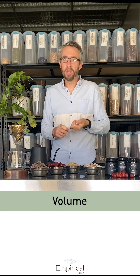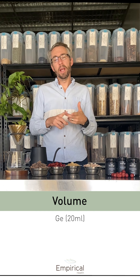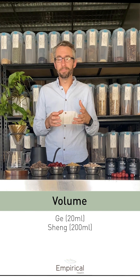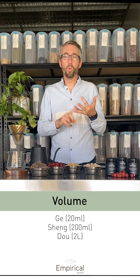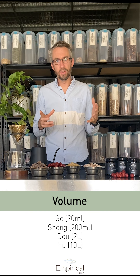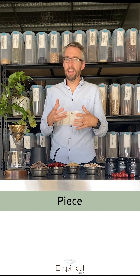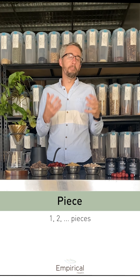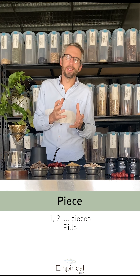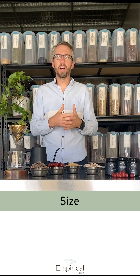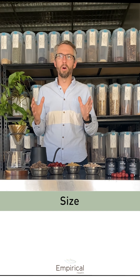For volume measurement, a Ge was 20 millilitres, a Sheng was 200 millilitres, a Dou was 2 litres, and a Hu was 10 litres. For piece measurement, you counted individual pieces — one piece of this, two pieces of that. Pills were also measured in piece terms, and this crosses over into the size measurement. Hou Po, for example, is measured by size — like a foot-long piece of bark.